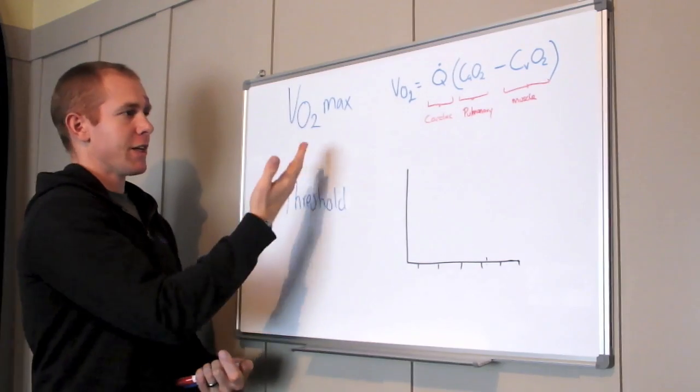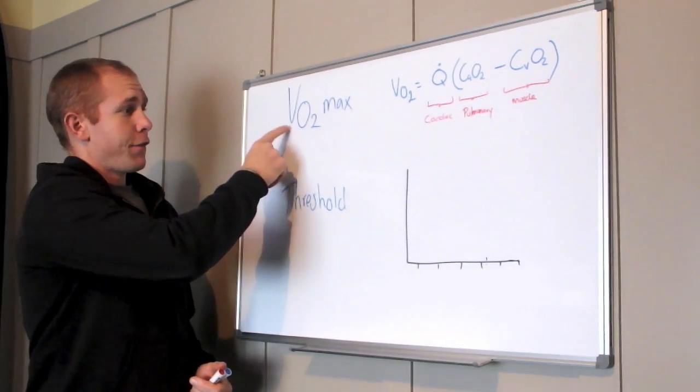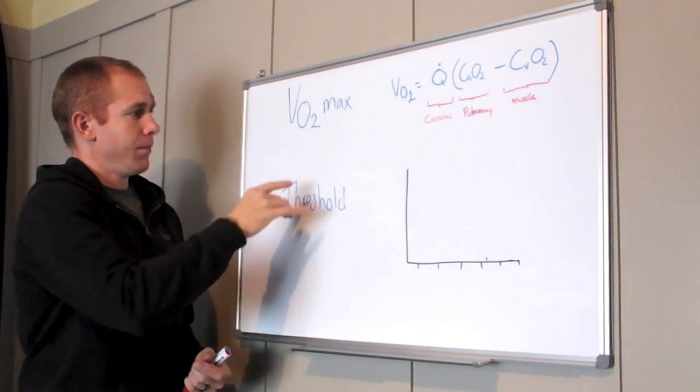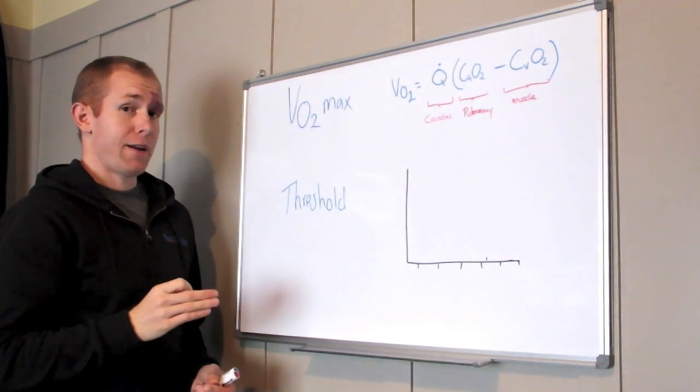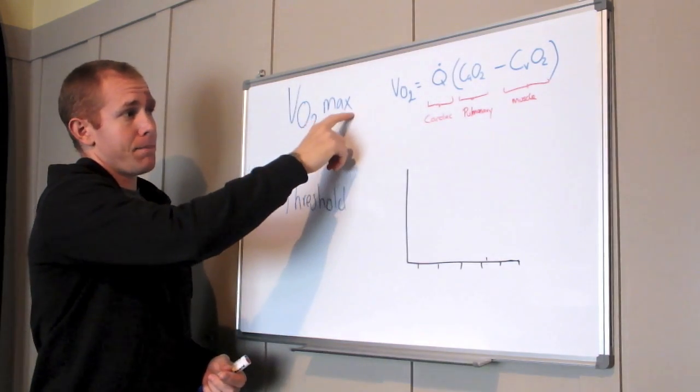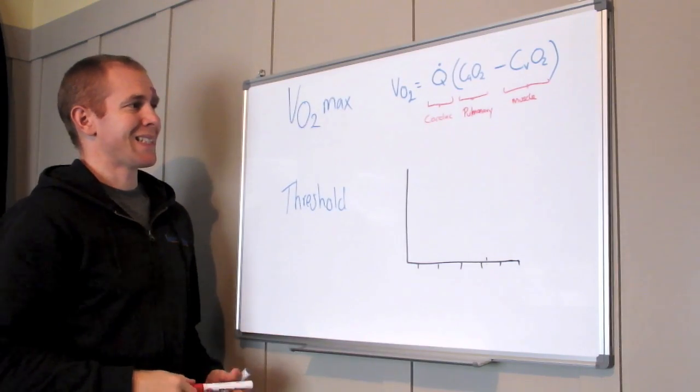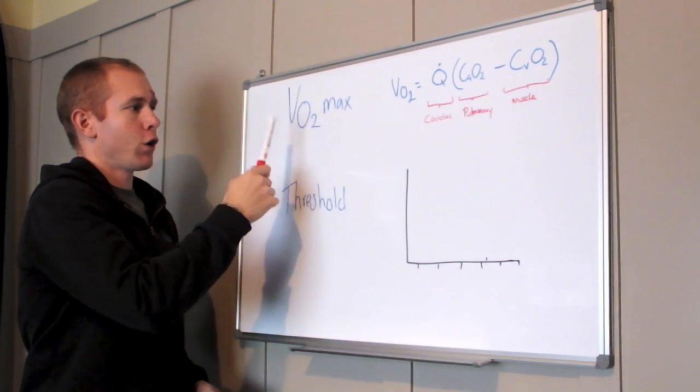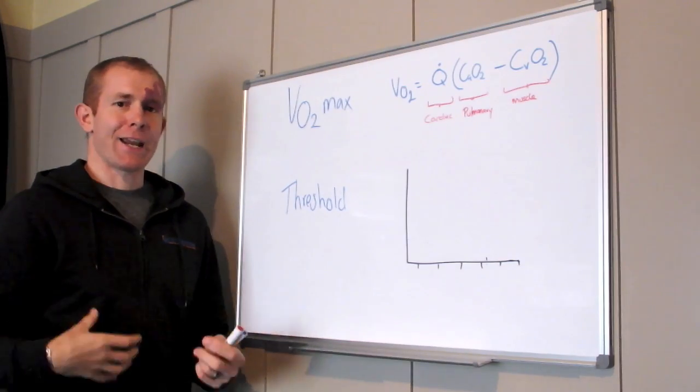Now let's have a look at VO2 max to start with. Let's break it down. The V stands for volume, O2, if you remember back to chemistry class, stands for oxygen, and max simply stands for maximum. So what VO2 max is, is the maximum volume of oxygen that your body can take in and use.